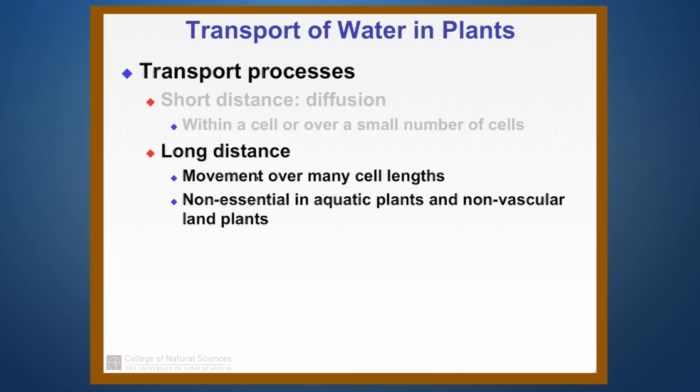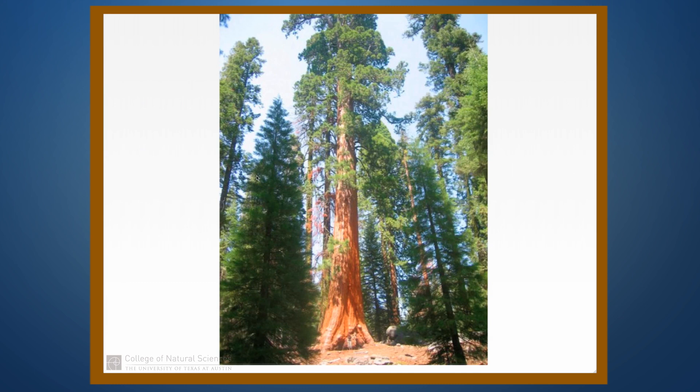What we really want to concern ourselves with in this lesson is the long distance movement over many cell lengths, and sometimes this can be pretty extreme. For example, here we have a picture of a redwood — the most extreme case in living plants — where water needs to move almost 100 meters from the soil to the topmost leaves of the plant. And how is the plant doing that?